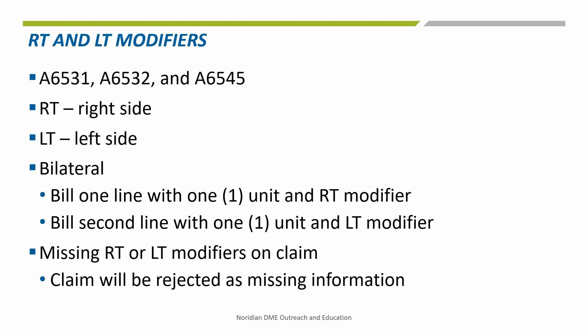The RT and/or LT modifiers must be used for gradient compression stockings and wraps. When the same code for bilateral items, left and right, is billed on the same date of service, they need to be separated on two different lines. Suppliers would bill one line item with one unit of service with the RT modifier and another line with one unit of service with the LT modifier. Claims billed without modifiers RT or LT will be rejected as missing information.